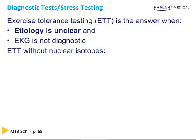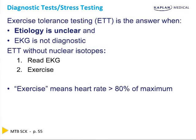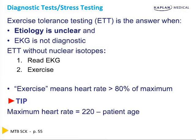A stress test — exercise tolerance test — requires you to be able to read the EKG for ischemia. What you look for on the EKG for ischemia is ST segment depression. You also need the patient to be able to exercise up to a sufficient heart rate. Maximum heart rate is 220 minus your age, and you don't need to reach 100% of it — even 80% is good enough. The stress test is for when the etiology is uncertain, not when it's already clear.